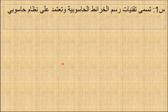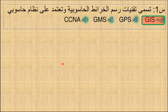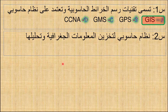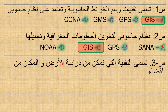الأسئلة: تسمى تقنيات رسم الخرائط الحاسوبية التي تعتمد على نظام حاسوبي - الخيارات: GIS، GPS، GMS، CCNA - الجواب الصحيح: GIS. نظام حاسوبي لتخزين المعلومات الجغرافية وتحليلها - الخيارات: GPS، GIS، نوع - الجواب الصحيح: GIS. تسمى التقنية التي تمكّن من دراسة الأرض والمكان من الفضاء.